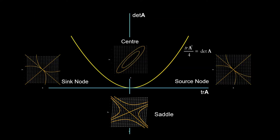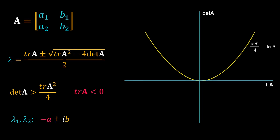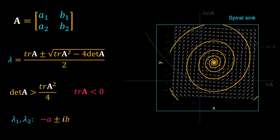When the trace of the coefficient matrix is not zero, the real part of the complex eigenvalue will also be non-zero, and the system shows damped oscillation. Consider det(A) greater than trace(A) squared divided by 4 and trace(A) negative — so we are in this region. The real part of the complex eigenvalues is negative. The dependent variables will show damped oscillation; with time the oscillation will decay and the system will reach the steady state — so the steady state is stable. If you start somewhere away from the steady state, the system will follow a spiral trajectory and collapse onto zero. This type of phase portrait is called a spiral sink.